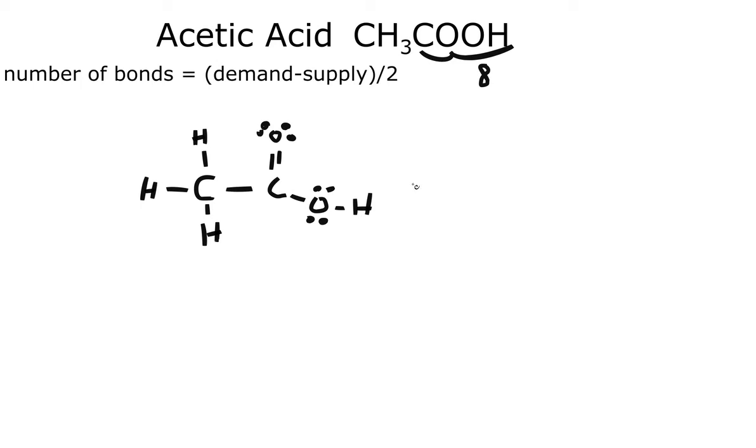Also, if you want to draw the skeletal structure, it just looks like this. We have a C - each of these corners is a carbon, but not in this case because we have an OH right here. So we have a carbon here and a carbon here and an OH. This carbon had a double bond to an O, and then this carbon just has three H's but it's not shown. So that is what our skeletal structure would look like. But as for the Lewis structure, this would be your answer.